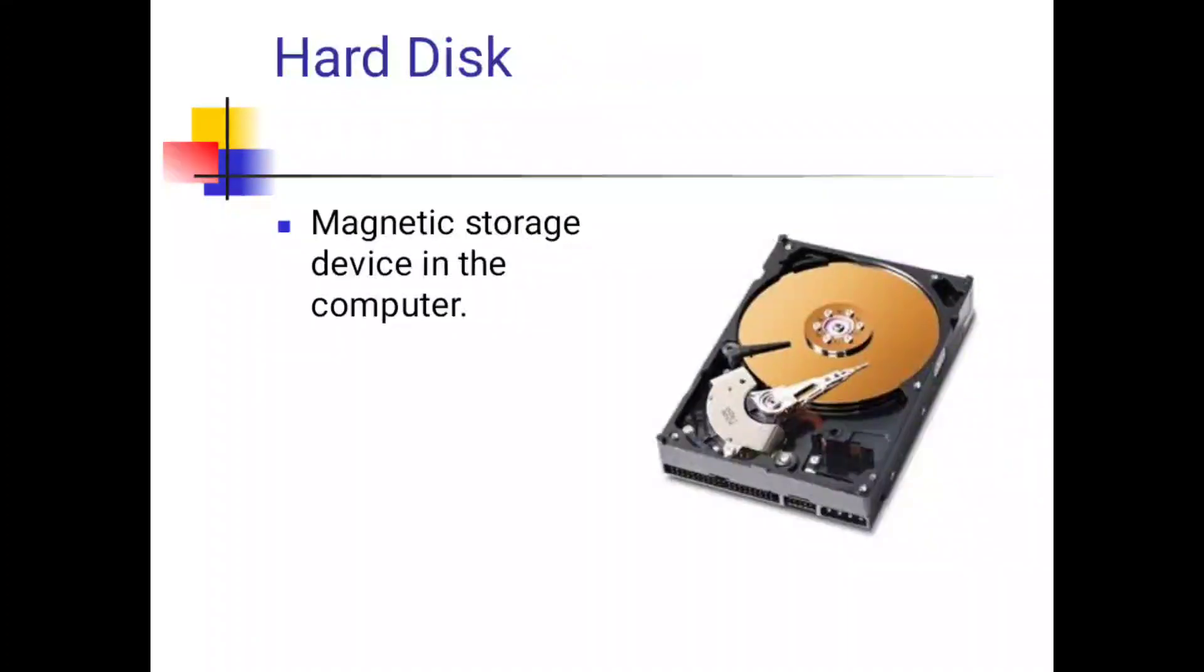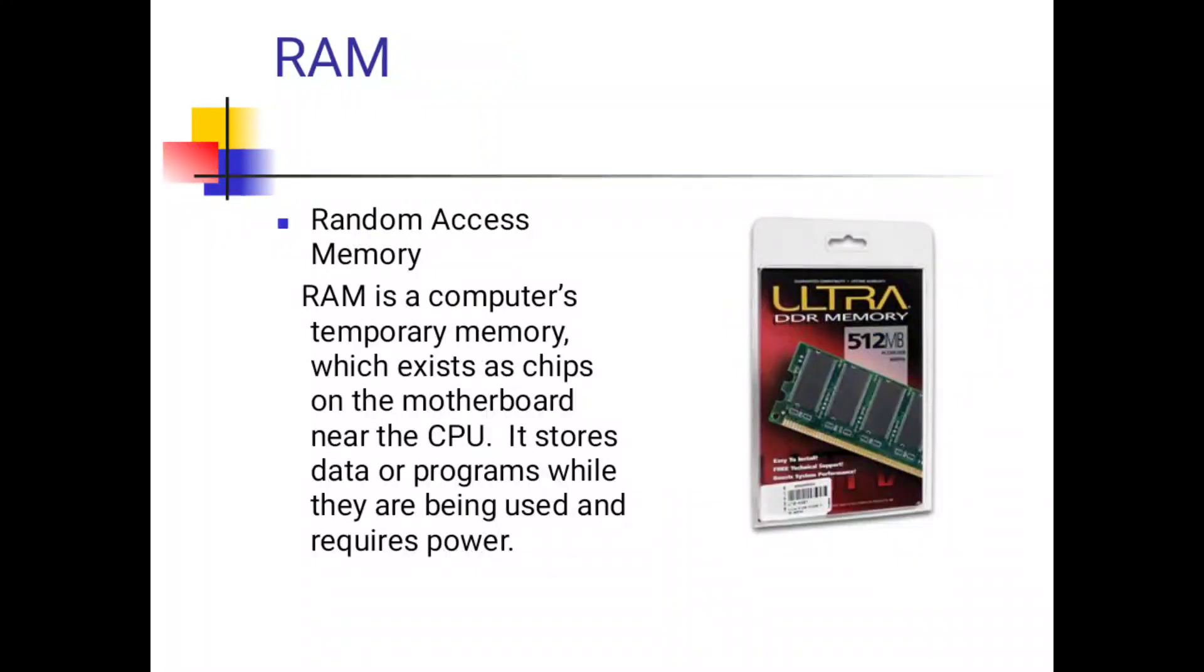Hard disk: magnetic storage device in the computer. RAM, random access memory: the computer's temporary memory which exists as chips on the motherboard near the CPU. It stores data or programs while they are being used and requires power.